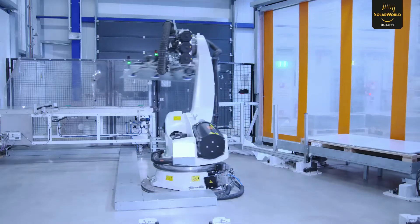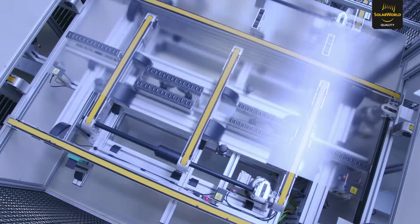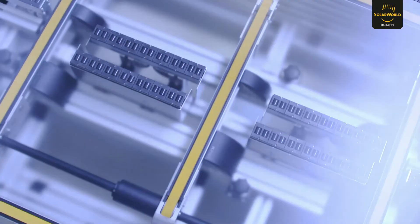Safety glass is one of their key components. It protects sensitive elements in the module and ensures optimum light yields thanks to its anti-reflective coating.